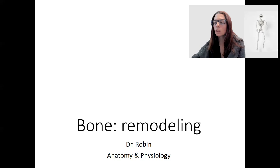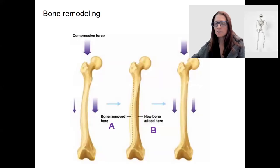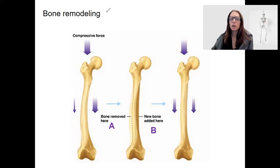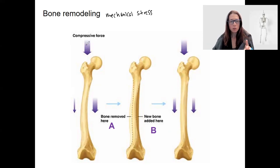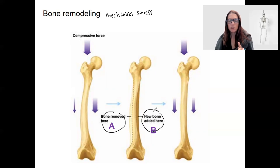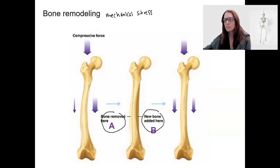Bone remodeling is based on mechanical stress. Based on where compressive forces occur and where the stress is greatest, that will stimulate bone growth and bone removal. This is showing over time, based on where the force is coming from, how the bone can adapt — removing bone here and adding bone here — to have that force better distributed along the compact pieces of the diaphysis.